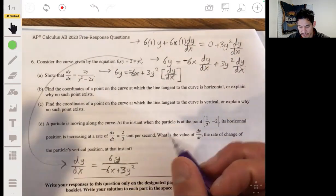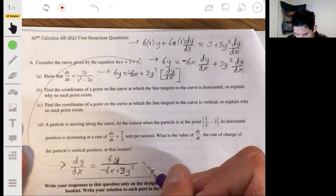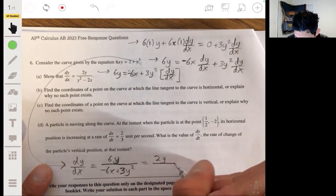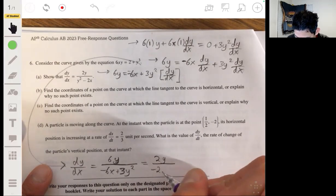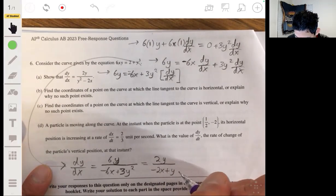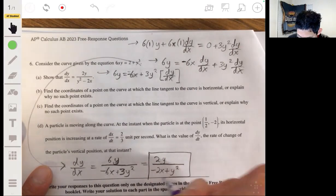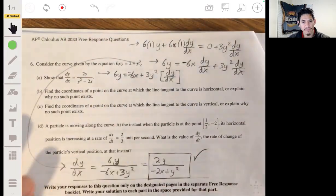So we're going to get dy/dx is equal to 6y all over negative 6x plus 3y squared. Cancel out a 3 from each term, and we get that it's equal to 2y over negative 2x plus y squared, which is what we got there. So that's part A.